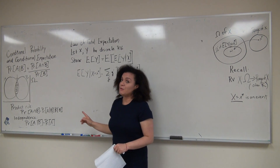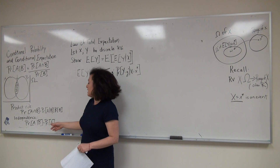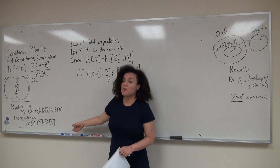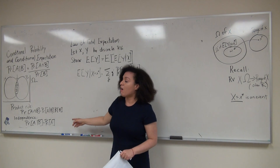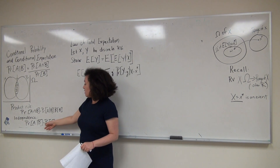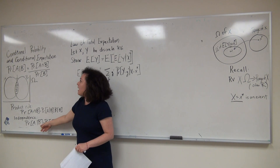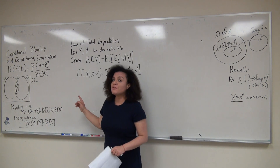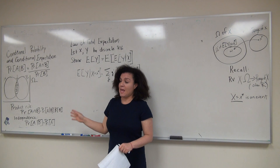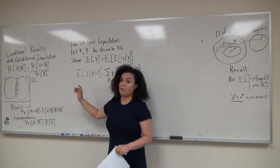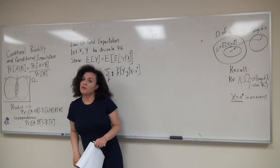Conditional probability is also useful for showing independence. If we show that the conditional probability of A given B is simply equal to the probability of A, we've shown that events A and B are independent. That means knowing what happened in event B tells you nothing about event A. You can also see this by observing that the probability of events A and B equals the product of their probabilities, applying the definition of conditional probability.